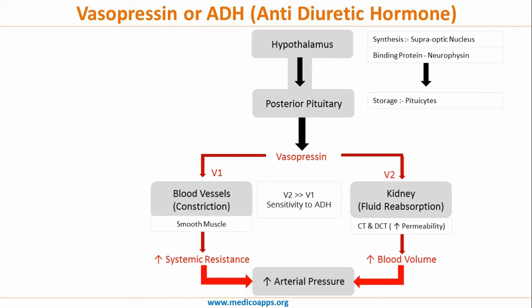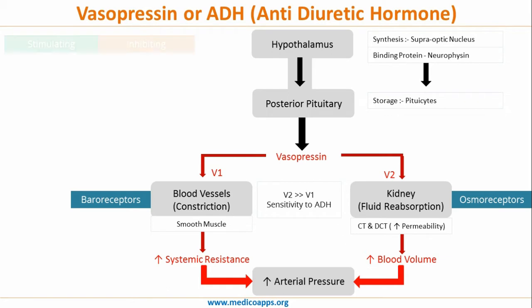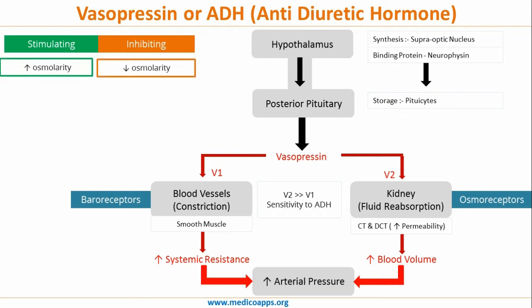Although V1-mediated vasoconstriction does occur, the action on V2 receptors is much higher due to sensitivity. At the blood vessel level there are baroreceptors, and at the kidney level there are osmoreceptors, which give various stimulating and inhibiting signals. Let's talk about each of these signals one by one.